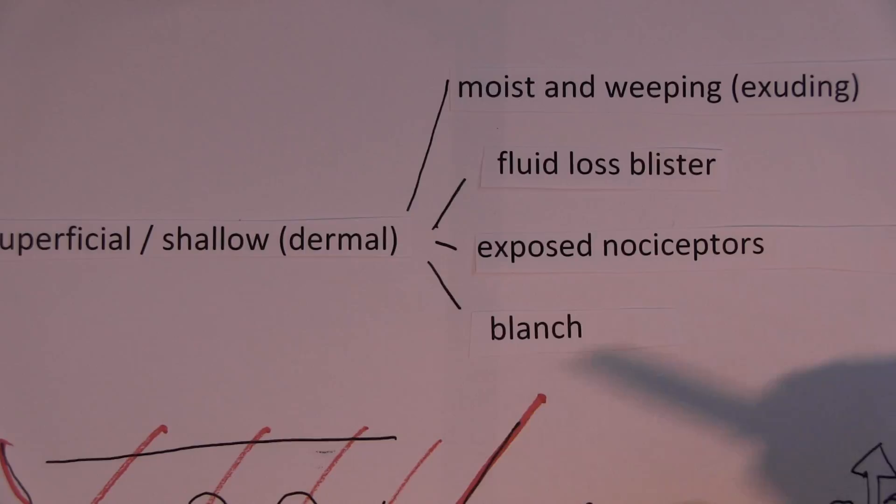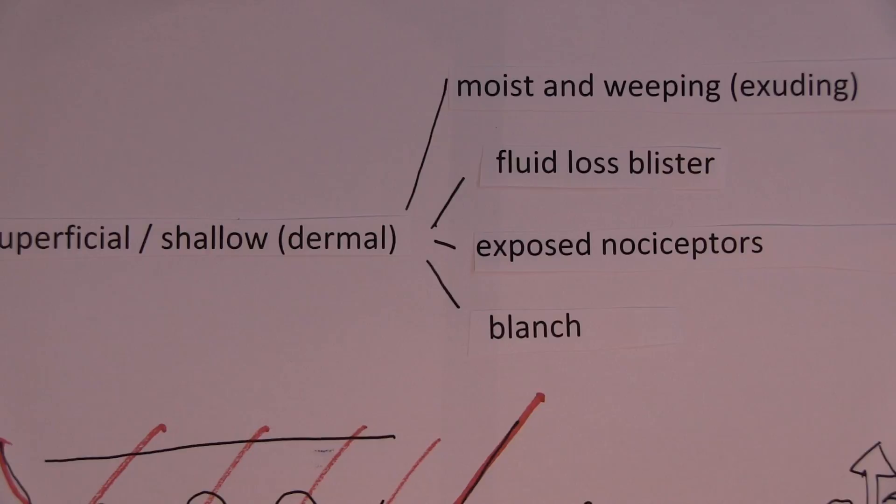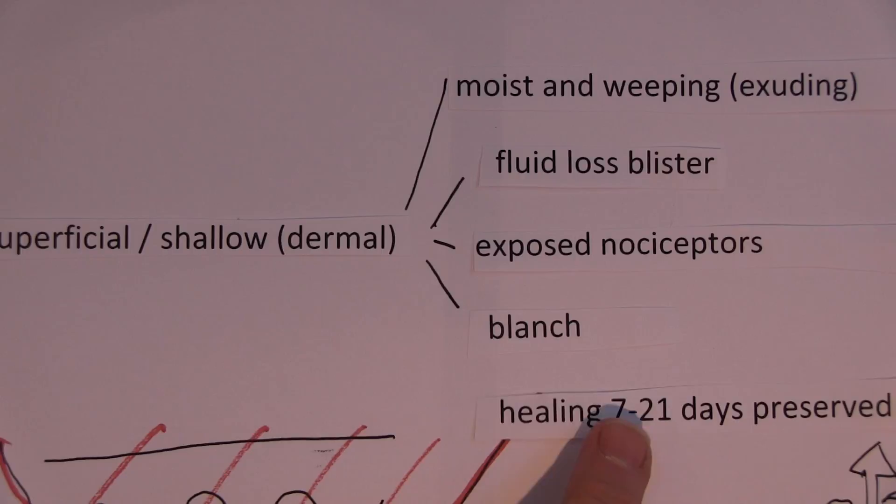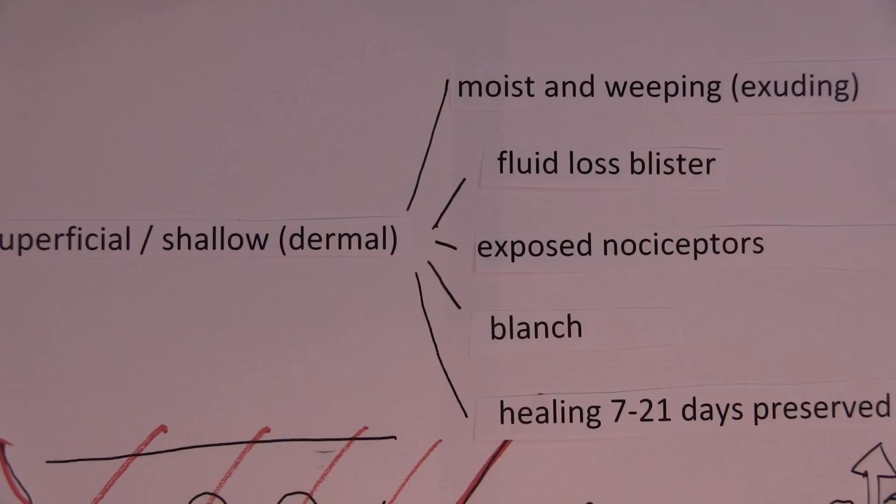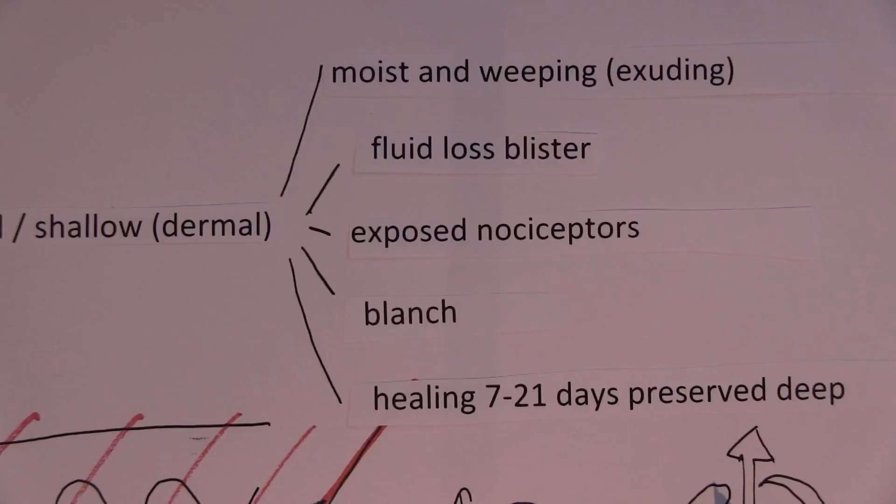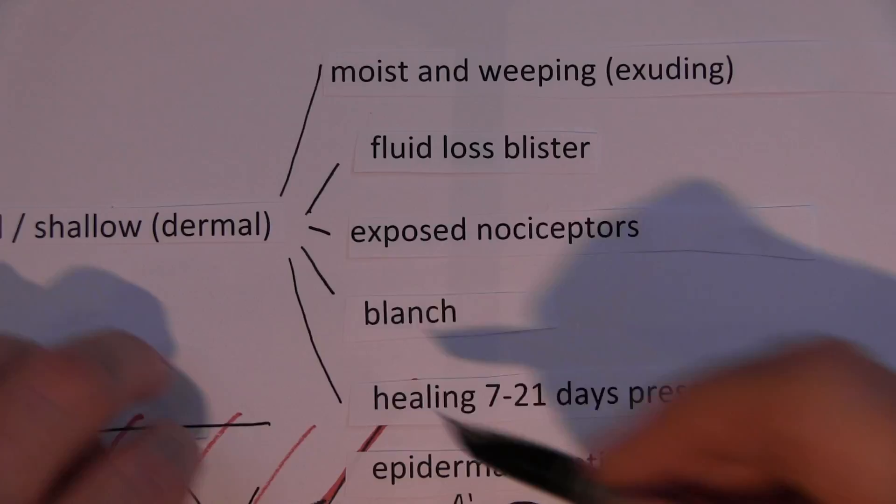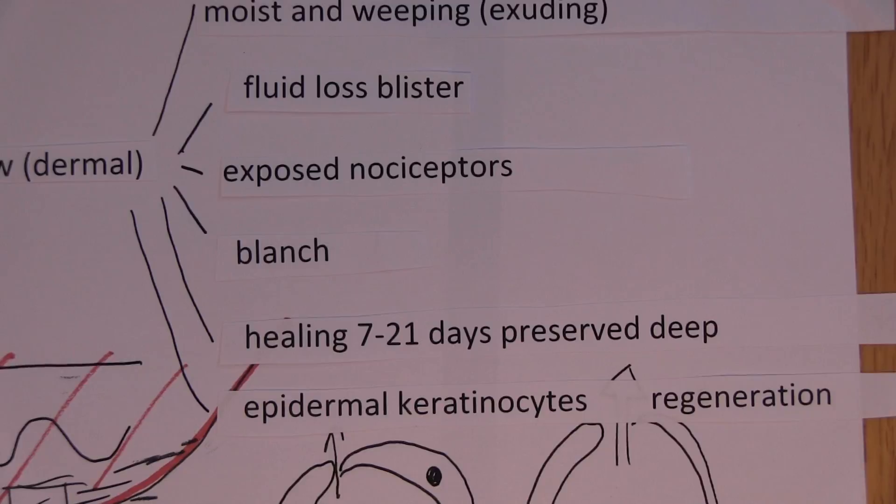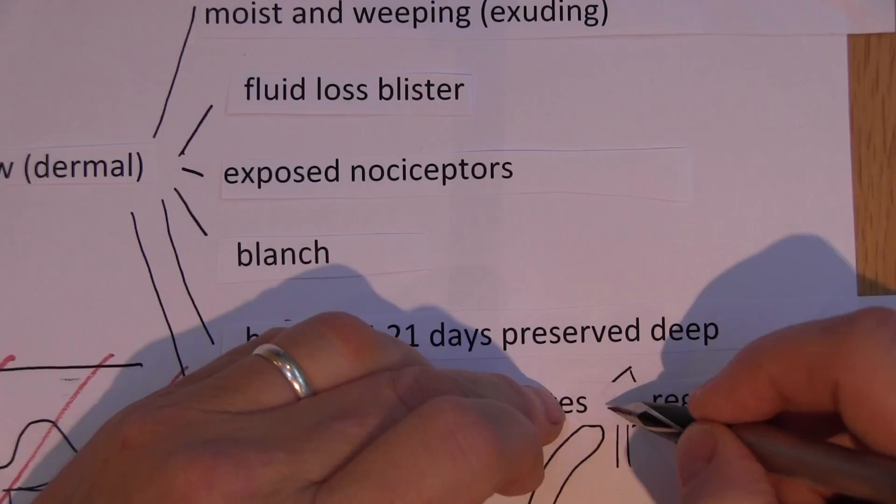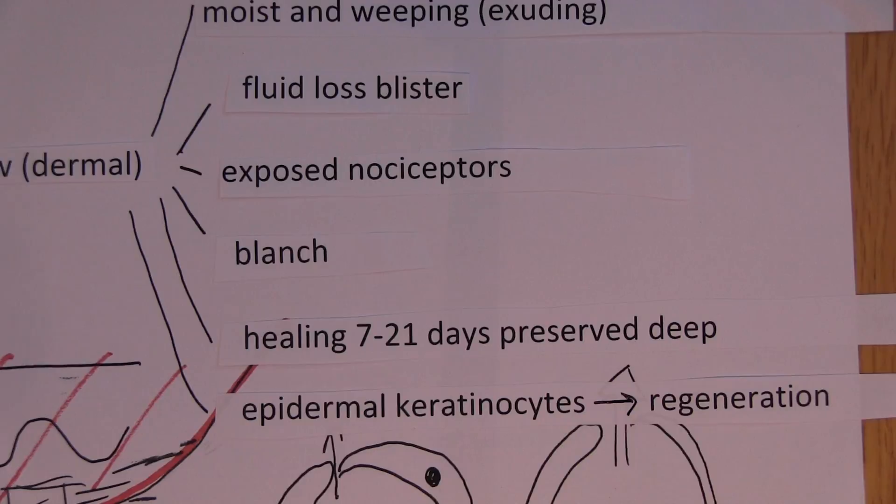Now, what are the implications for healing? Well, healing is normally 7 to 21 days as long as we can keep the wound moist and keep the infection out. Healing is in 7 to 21 days. And there's preserved deep structures. I'll show you what that means in a minute. Preserved deep structures. Because we preserve some epidermal keratinocytes. So epidermal keratinocytes are preserved in the lower areas, in the lower areas of the dermis. And that means we can regenerate. They can get tissue regeneration.